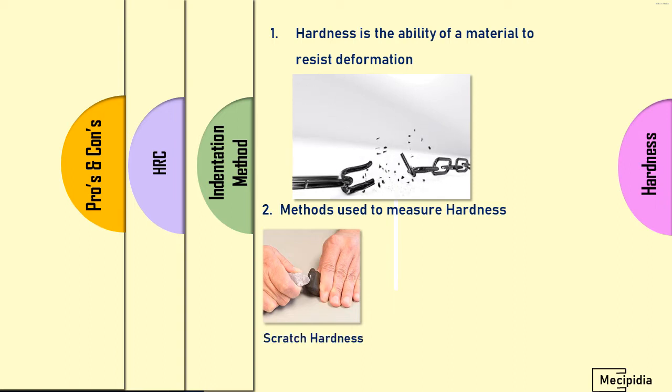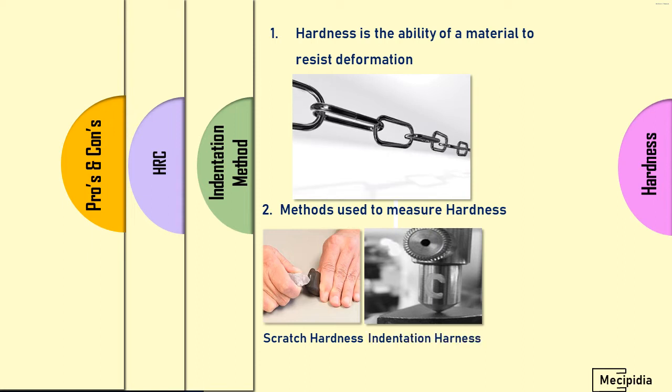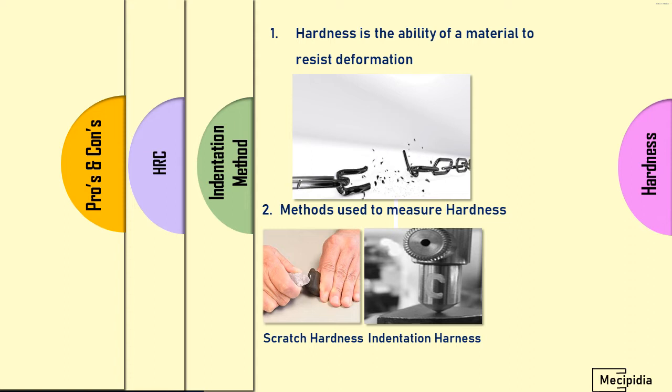There are three methods widely used to measure hardness. First is scratch hardness - by scratching the material, the hardness is measured. Second is indentation hardness, where a ball intender with application of force is applied on the test piece.